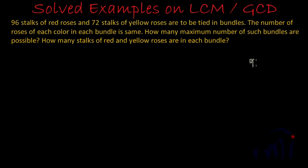So 96 is the bigger number, so it will become the dividend and 72 will become the divisor. It will divide 96 only once, 72, and here we will get 24 as remainder.